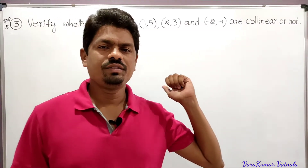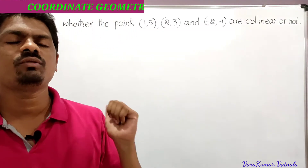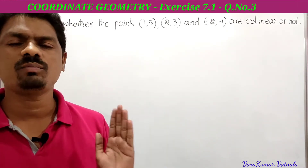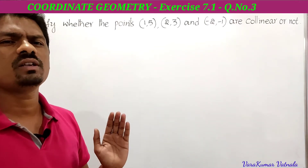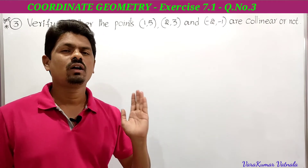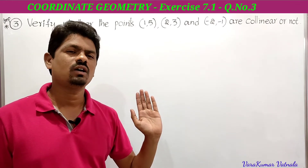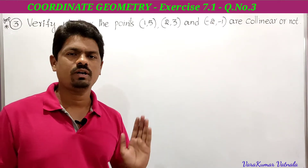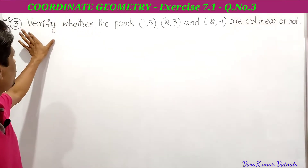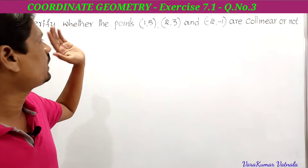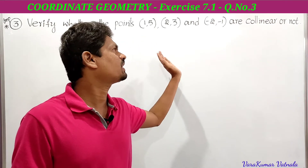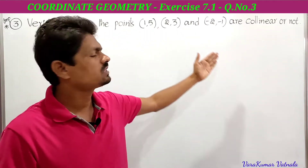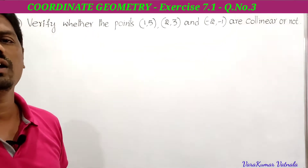Now we have to solve the third problem from exercise 7.1. It is very important — it is on collinear points, and it is asked for either two marks or four marks. The problem says: verify whether the points (1, 5), (2, 3), and (−2, −1) are collinear or not.